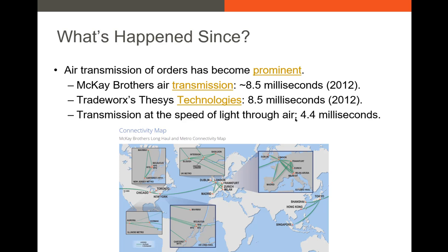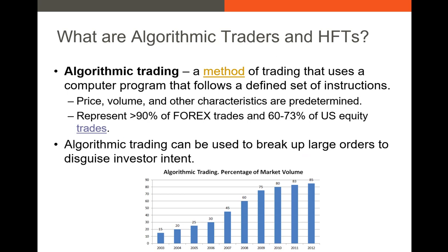The distance from Chicago to New York is about 825 miles. At the speed of light, an order sent through the air theoretically takes about 4.4 milliseconds, meaning these high frequency traders are closing in on the theoretical maximum speed at which they can send orders.